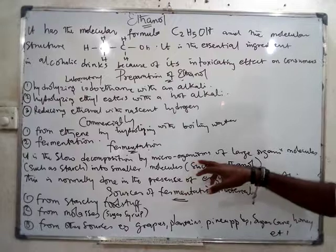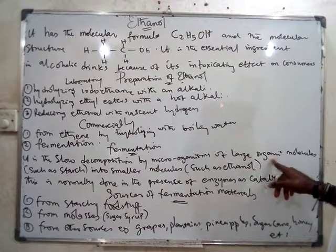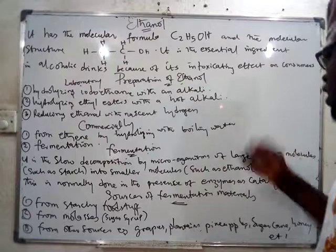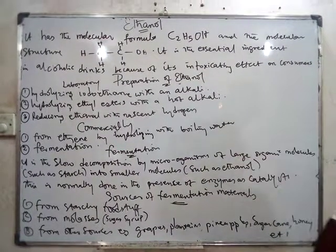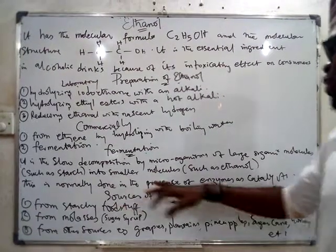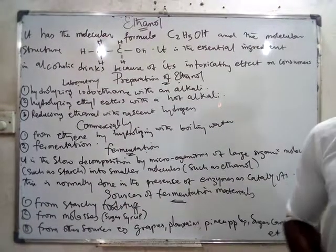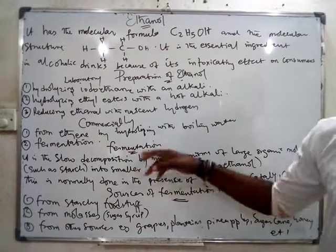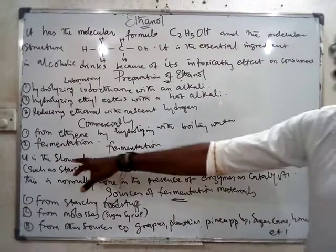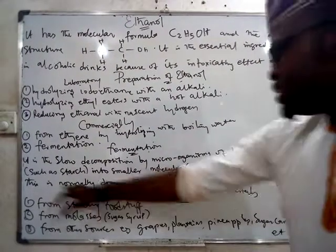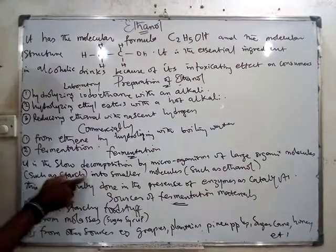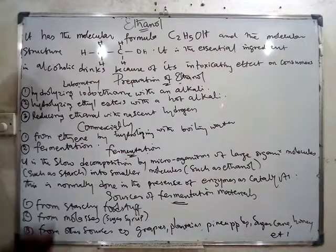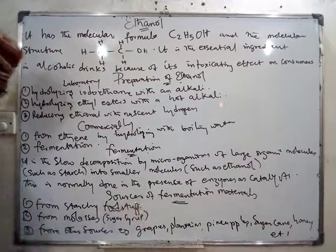Fermentation is the slow decomposition by microorganisms of large organic molecules, such as starch, into smaller molecules such as ethanol. So when you break down starch to form ethanol, it is called fermentation, and it is a slow process. This is normally done in the presence of enzymes, which act as catalysts.